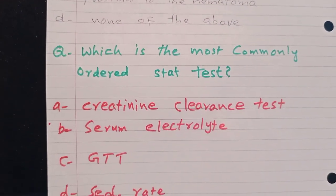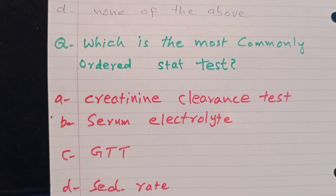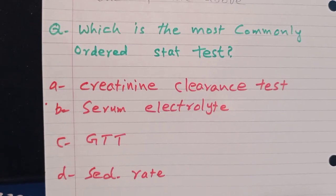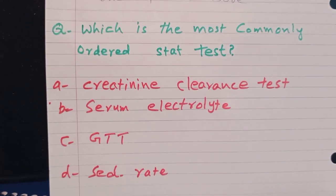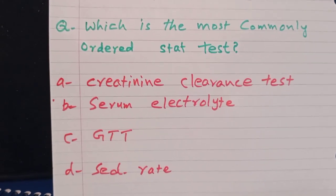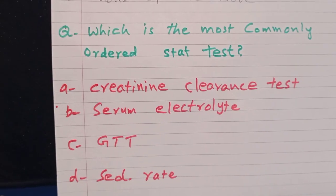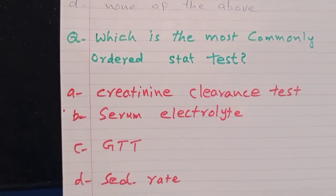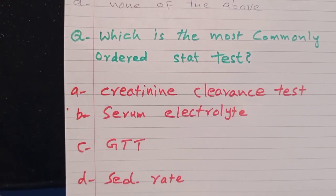Which is the most commonly ordered STAT test? Creatinine clearance test, serum electrolyte, GTT, sed rate. The answer is B, serum electrolyte. Most commonly ordered STAT test is serum electrolyte.